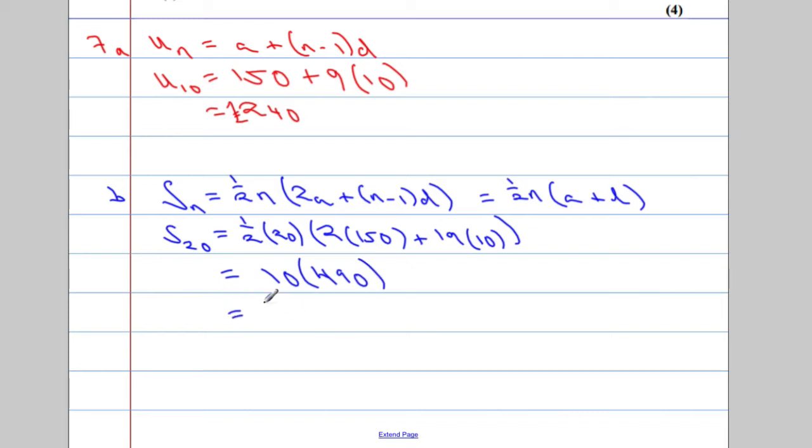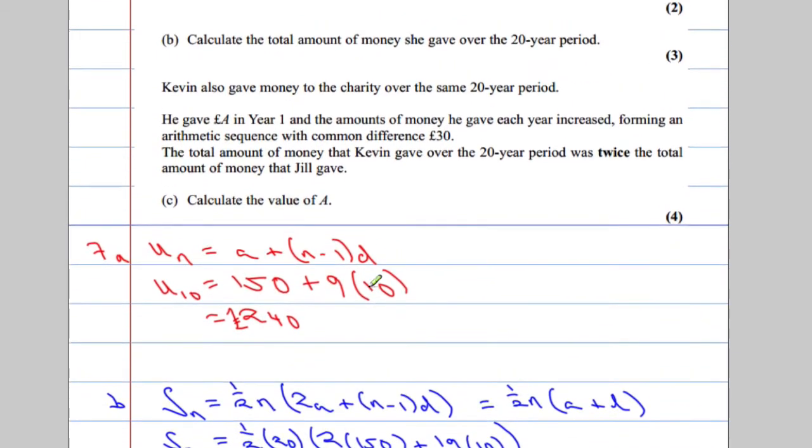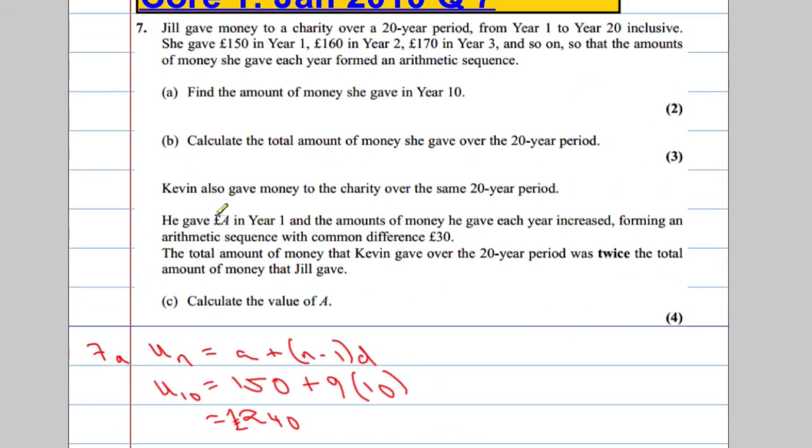And when we times that by 10, that tells us that over 20 years, she's given a total of 4,900 pounds. Okay, next part, Kevin also gave money to the charity. What a lucky charity. He gave £8 in year 1, and the amount of money he gave each year increased, forming an arithmetic sequence as well.